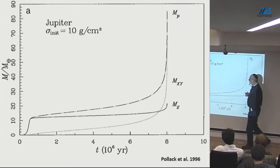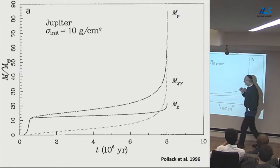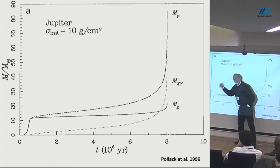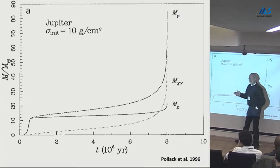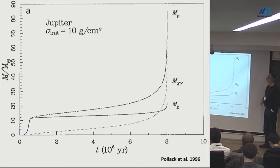One thing worth asking: if this is a critical core mass, why doesn't the gas just fall on? You have to release energy, but I think one part that wasn't stressed is that the luminosity here is extremely high. When you do the calculation using that equation and the luminosity you get, this is growing extremely quickly. This is not the critical core mass — this becomes the critical core mass after everything has cooled off.